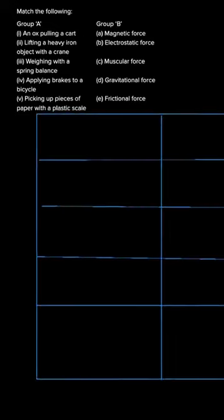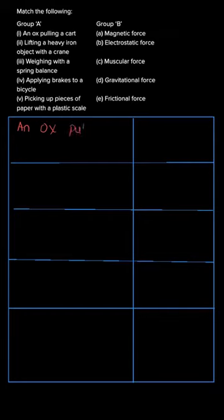So we can draw a table first. The first question in group A is an ox pulling a cart. We know that the force which is required for an ox to pull the cart is the muscular force. So we can write it in the answer box.